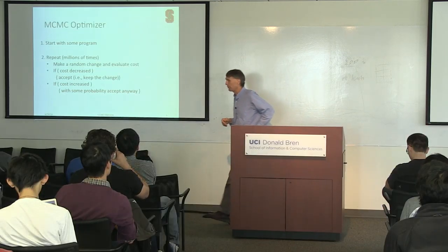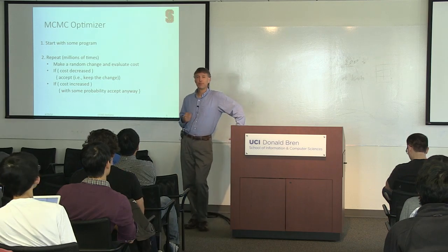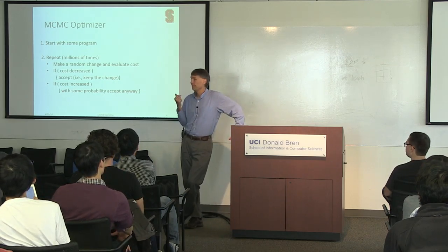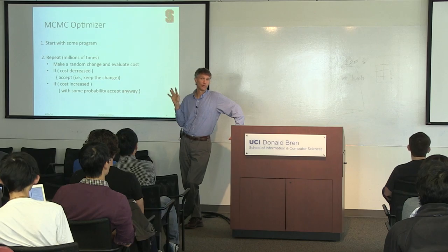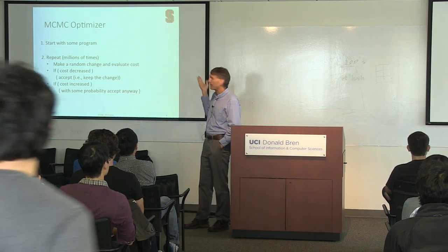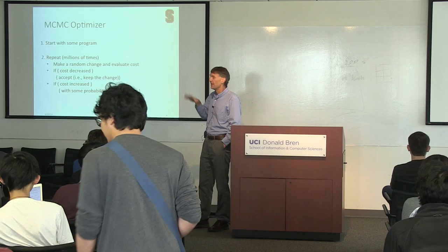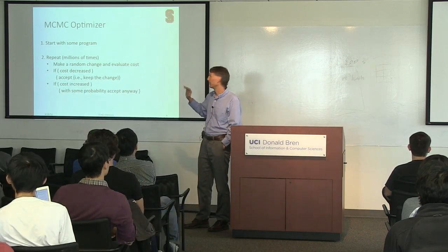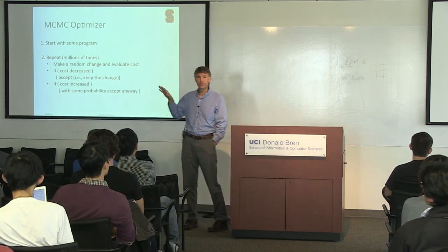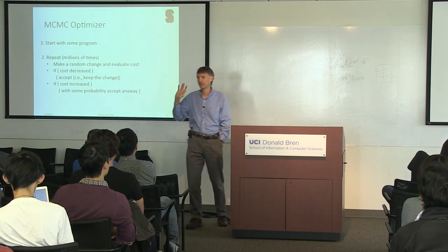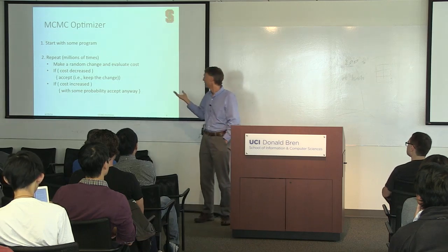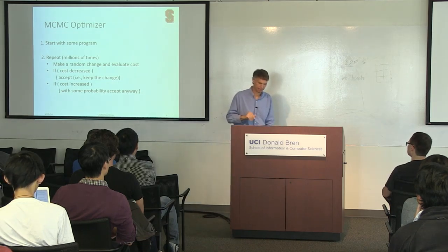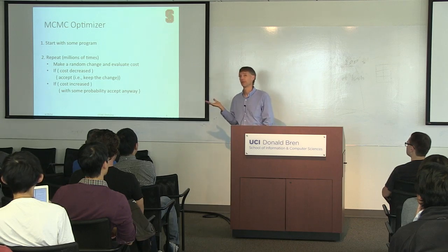What would this look like? You start with some program and then repeat the following procedure millions of times: make a random change to the program and evaluate the cost. You have a cost function that tells you whether the program got better or worse. If the program got better — cost went down — you always accept that change. If the cost increases, then with some probability you accept the change anyway; probably you don't, but if the cost increase wasn't too bad, you accept it.